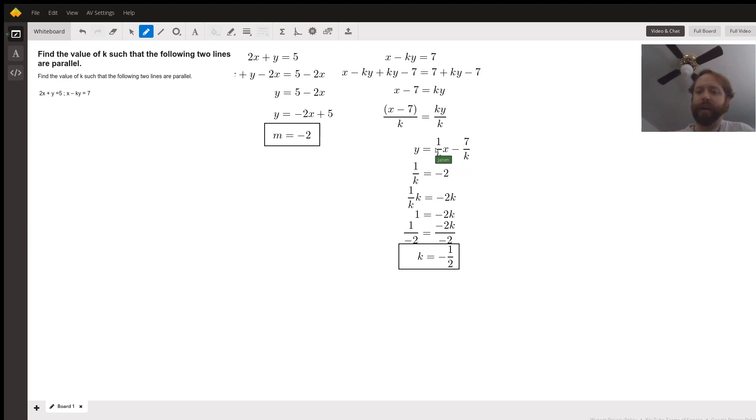Our m in this equation is 1 over k. We want to set that equal to negative 2. So 1 over k equals negative 2. Multiplying both sides by k gives us negative 2k equals 1. Dividing both sides by negative 2 gives us k equals negative 1 half.